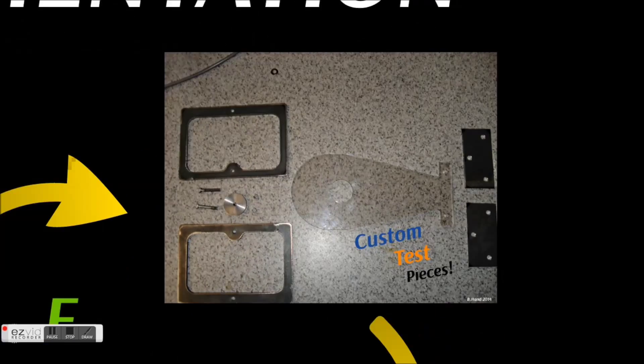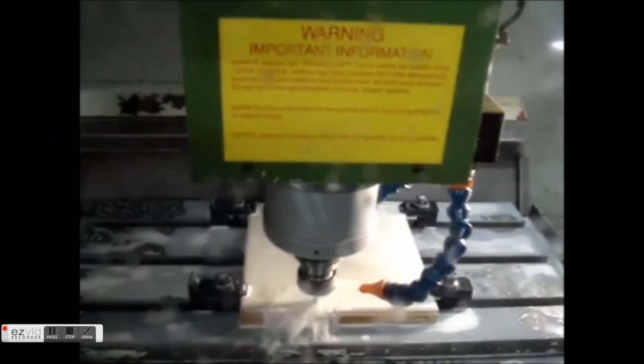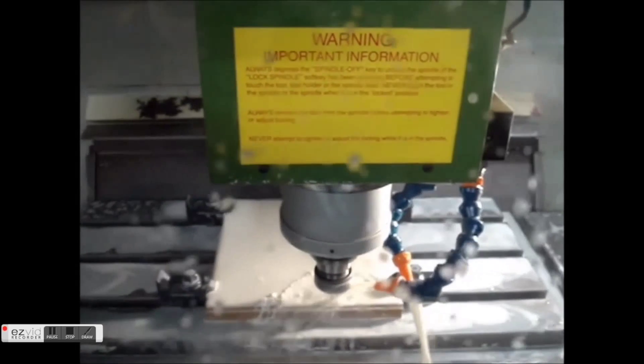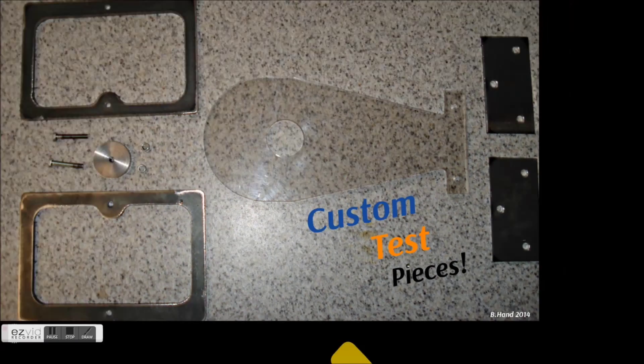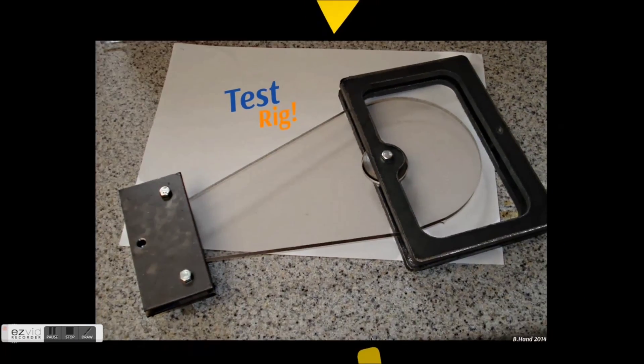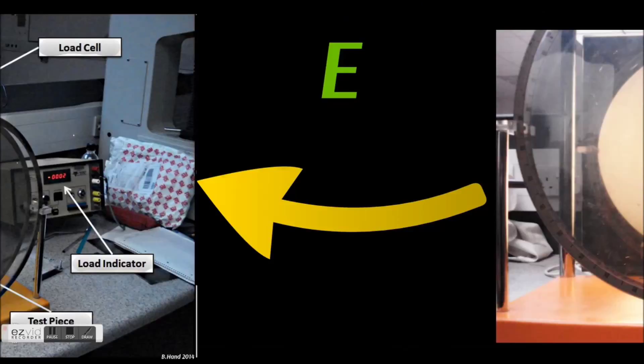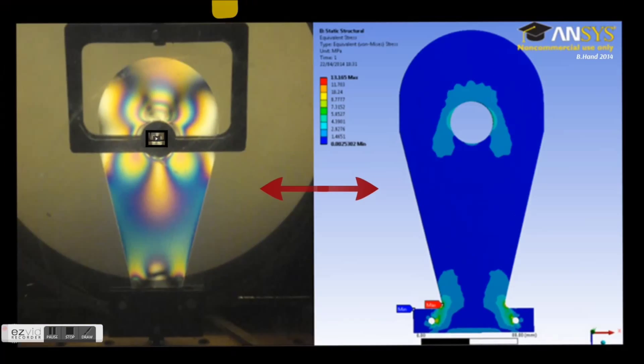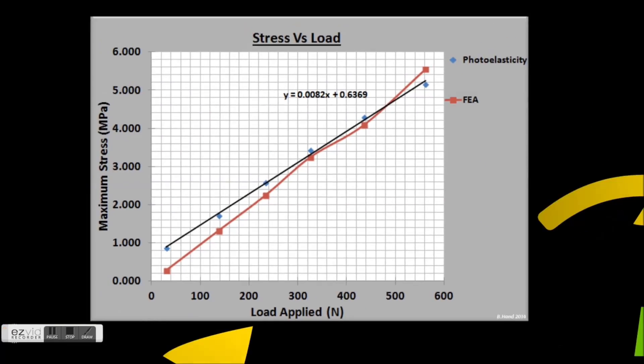Before prototype production could commence, design experimental validation was conducted in the form of photoelasticity, which is a full-field experimental testing technique. Custom test supports had to be pre-manufactured and testing was carried out using photoelastic test configuration. A good correlation was found between experimental and numerical analysis techniques.